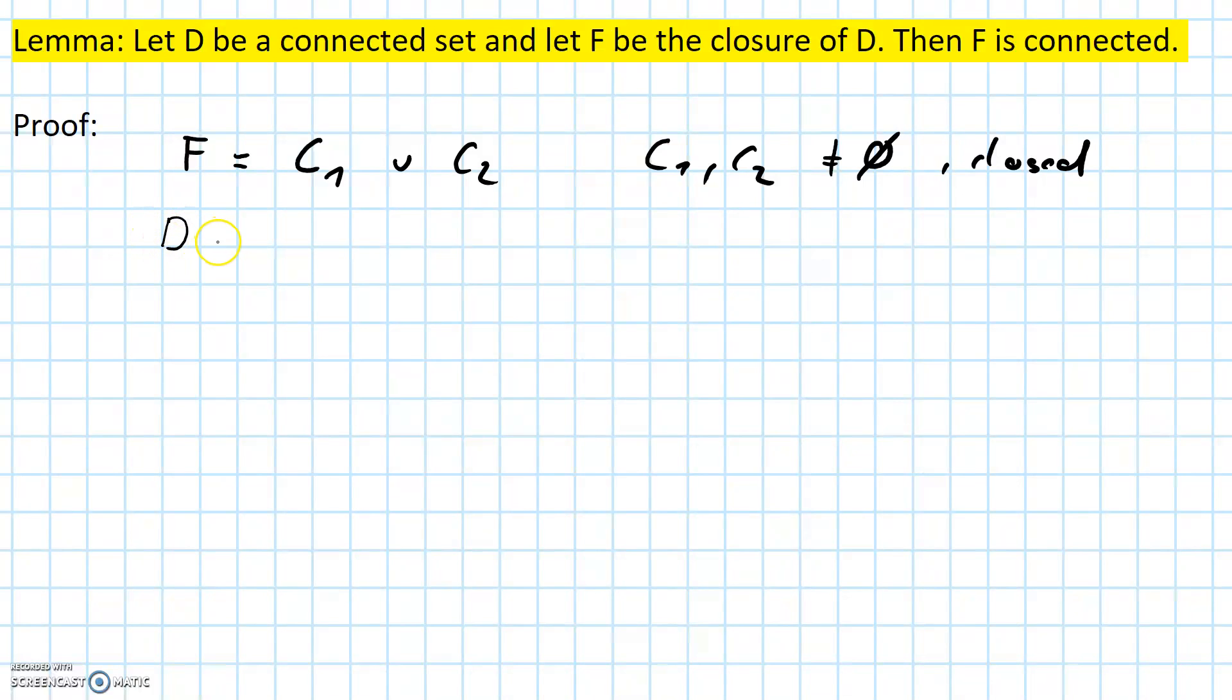D intersected with C1 and D intersected with C2. Then the union of these two intersections is nothing but D itself.